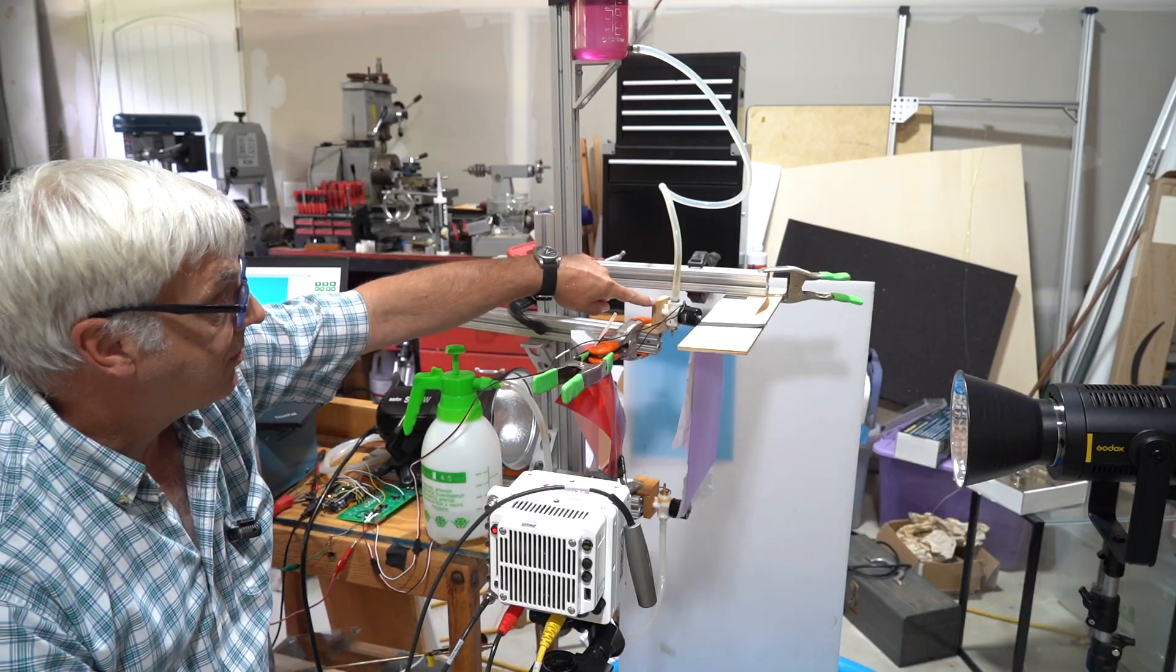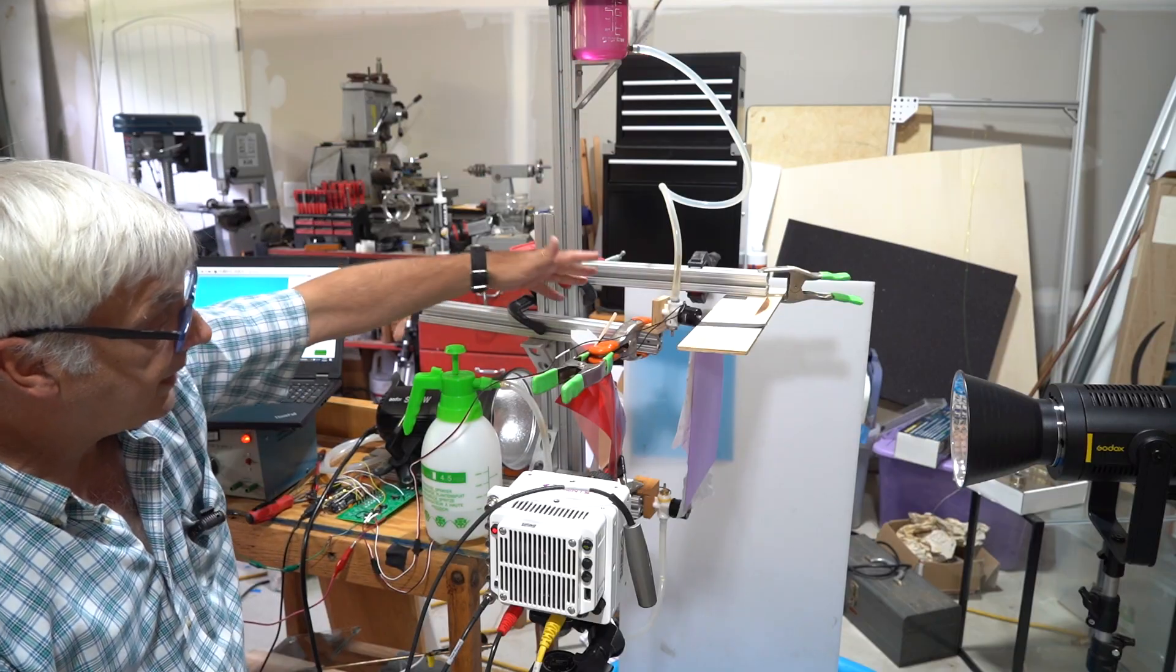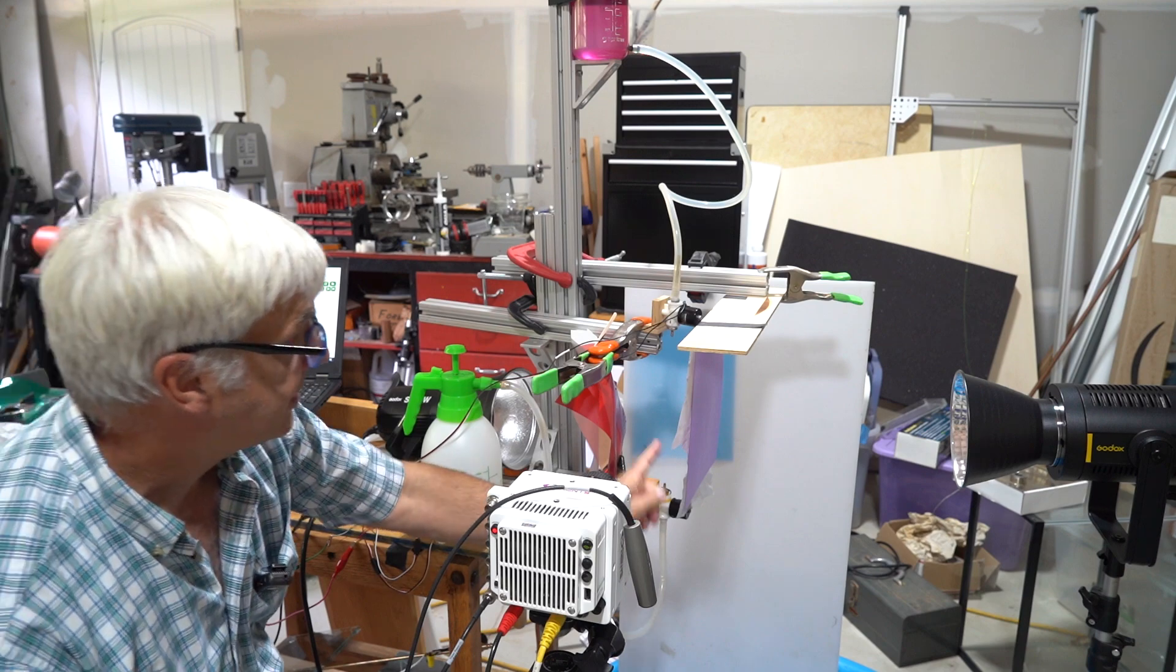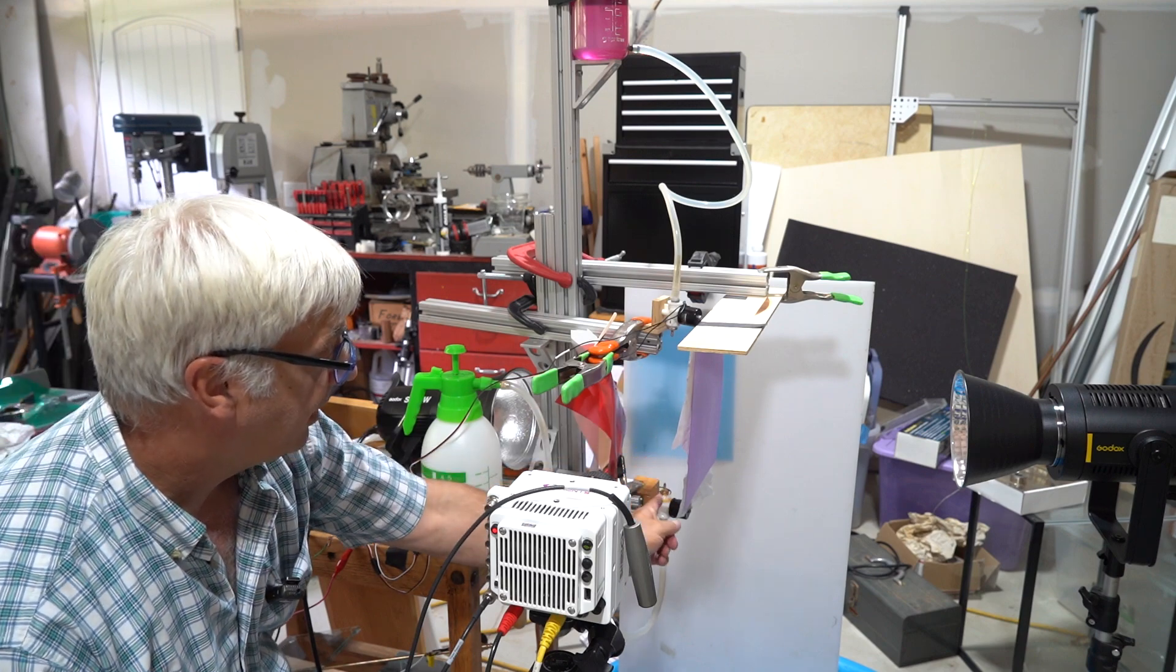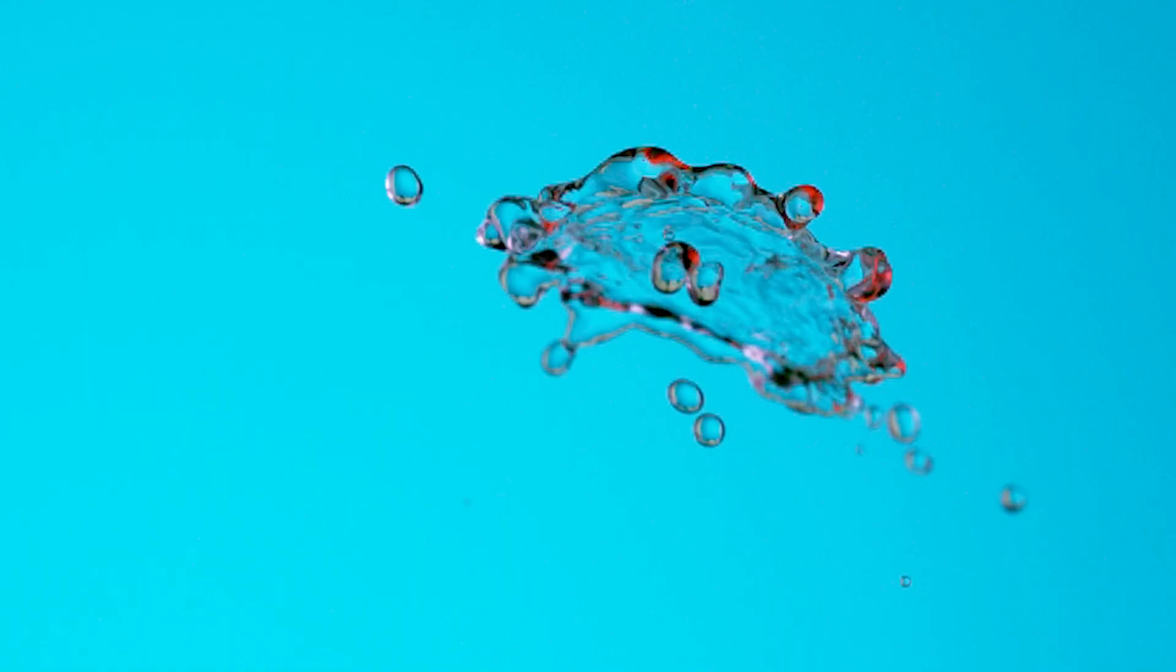And then this top dripper is hooked up to a Marriott siphon up top here. And they're timed so that this drip, as it comes down, collides with the bottom drip about halfway up here. And there's all sorts of filters here so that we add some color to the shot. And we'll talk about those in a bit.